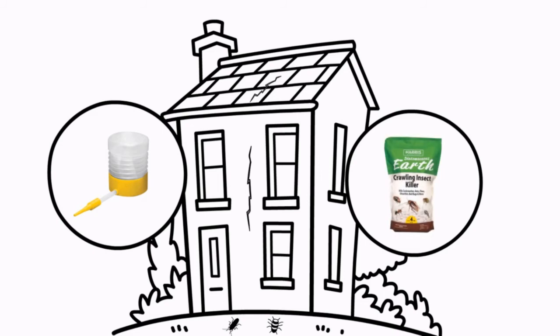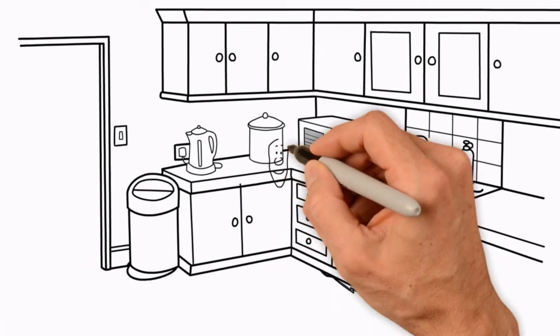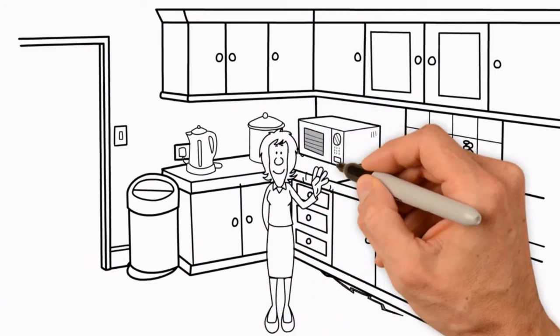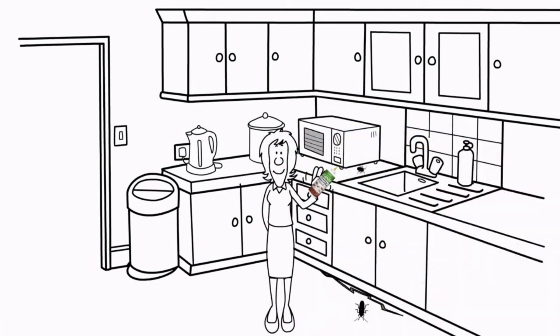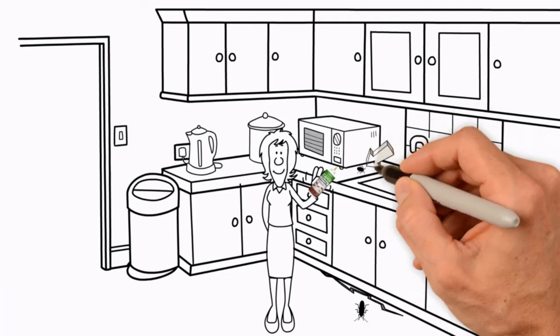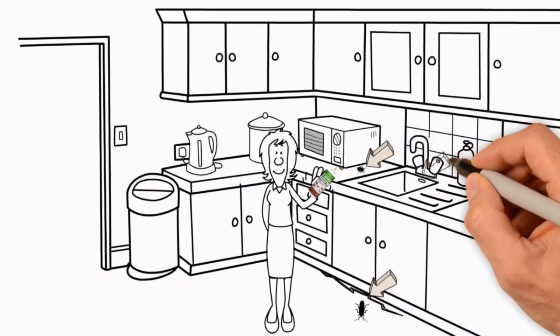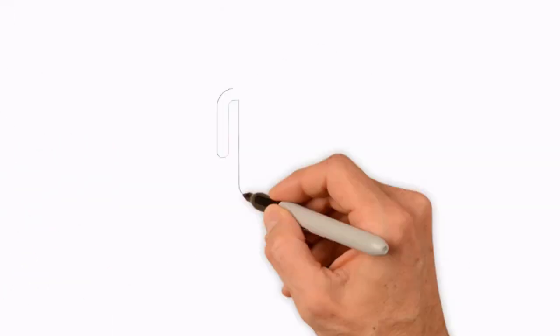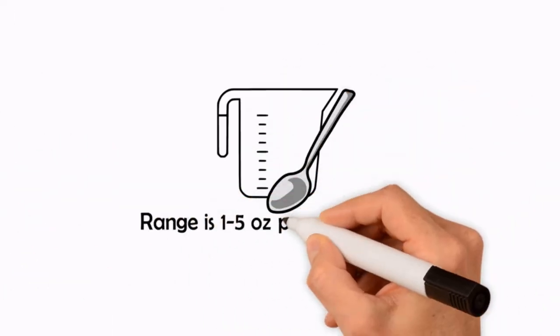You will want to apply Harris Crawling Insect Killer to areas where insects are found. Apply into cracks and crevices. Apply light and uniformly to infested areas. Can be applied behind and beneath appliances, cabinets, pipes, etc. Rates vary by site but range is 1 to 5 oz per 100 square feet.